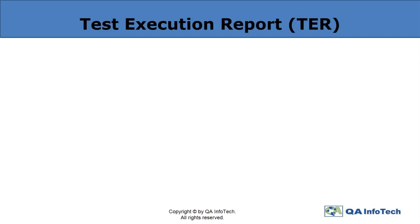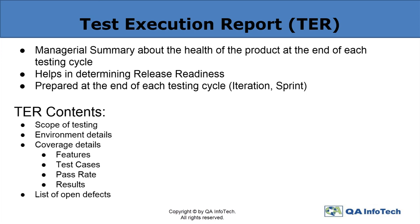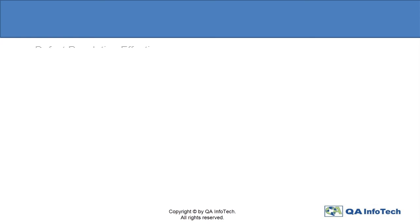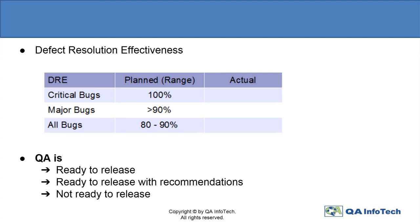A test execution report presents a managerial summary about the progress and condition of the product at the end of each testing cycle — be it an iteration or sprint — in determining release readiness. It includes the scope of testing, test environment details, coverage details, the list of open defects, defect resolution effectiveness, and finally a statement on whether QA is ready to release with recommendations or whether the product is not yet ready to be released. With this, one gets a comprehensive insight into the position of a project or software product's status.